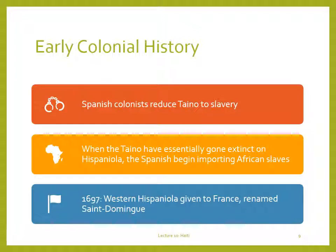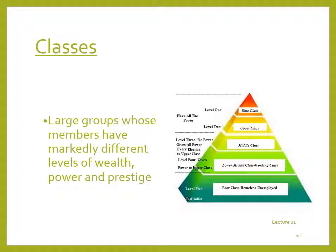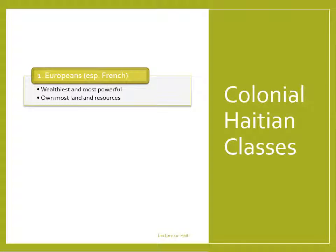In 1697, possession of the western part of Hispaniola passed from Spain to France, who named their colony Saint-Domingue. Haiti, like all state-organized societies, maintained a strict social hierarchy based on class. Classes are large groups of potentially unrelated people who have markedly different levels of wealth, power, and prestige. In Haiti, this class system came to be based largely on one's race. Those of European ancestry, especially French ancestry, formed the upper class—wealthy, powerful, and respected members of society that owned most of the land and resources, including slaves.